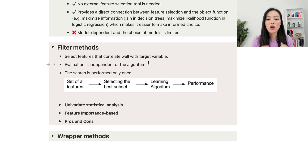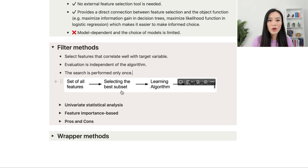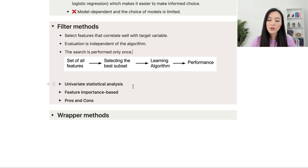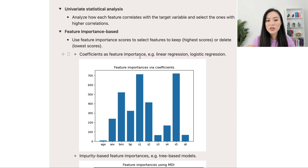Filter methods select features that correlate well with the target variable, and the evaluation is independent of the algorithm. From all available features, filter methods select the best subset, which is then used to fit the learning algorithm, and performance is evaluated. The search is performed only once. Two commonly used filter methods are univariate statistical analysis and feature importance-based feature selection. Univariate statistical analysis evaluates the correlation of each feature with the target and selects those with the highest correlations.